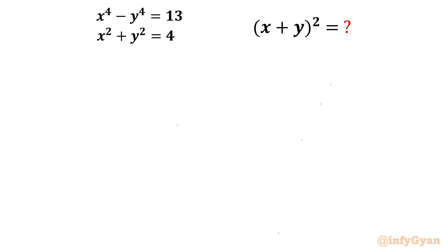Welcome to Infigya, my dear friends. In this exciting and powerful video on algebraic challenging equations, we are going to take up one interesting and challenging problem from the Math Olympiad. It is on a system of equations. We have two equations: x⁴ minus y⁴ equals 13, and x² plus y² equals 4. We have to find out (x plus y) whole square.